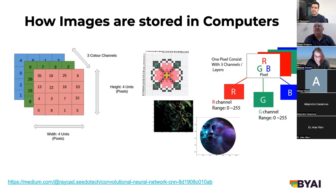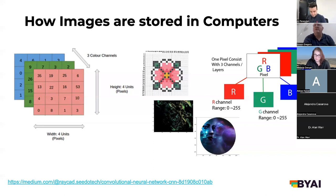A color image is three separate color channels of numbers stacked together, and the computer figures out what color to print on screen for you. Videos are just basically an array of images played through time. That's how images are stored in a computer and how they're comprehended by computers.